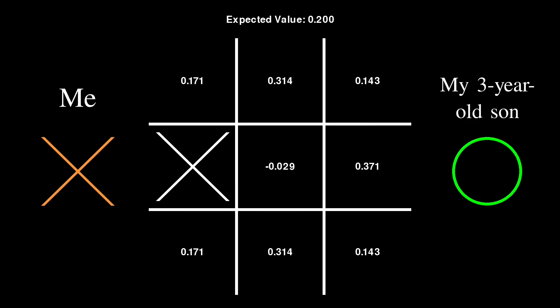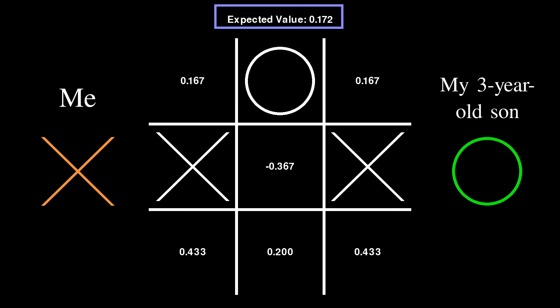My son responded with an adjacent edge, not technically the worst possible move but pretty darn close. In response, I once again chose the move with the lowest possible score, the right edge. This got the expected value down to 0.172.